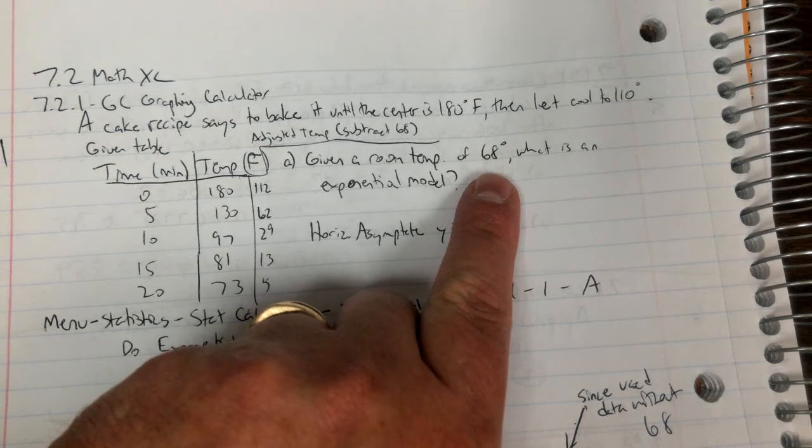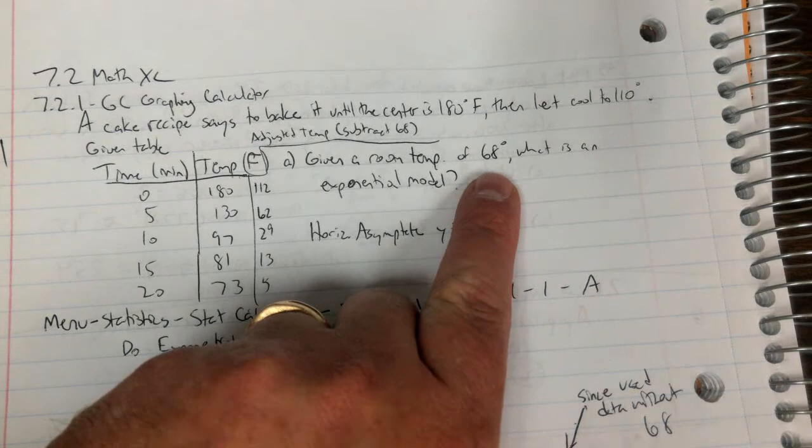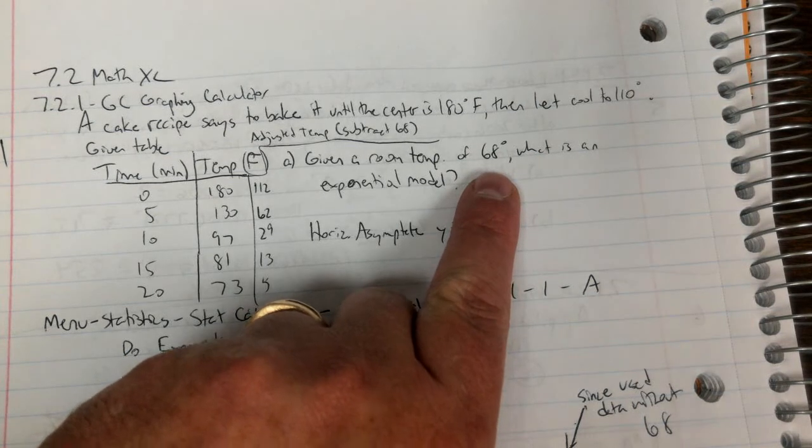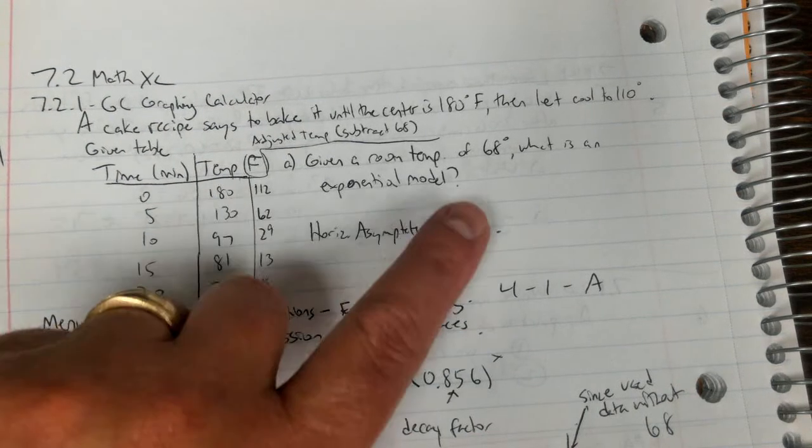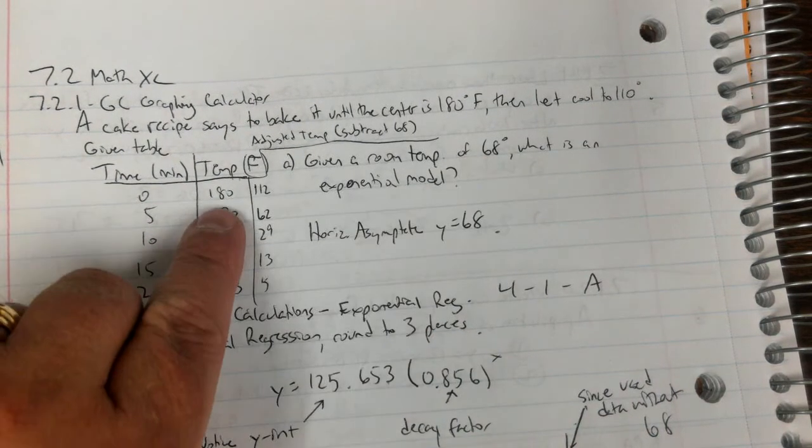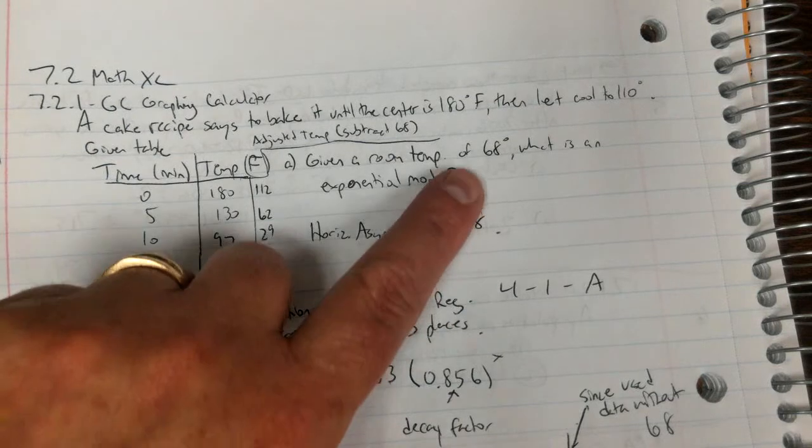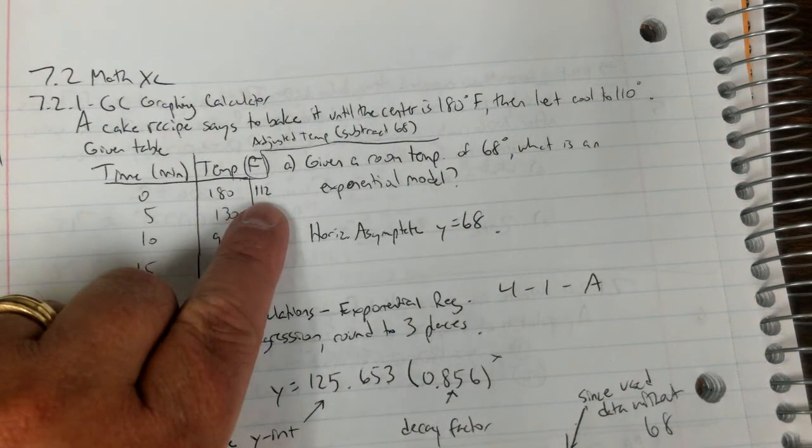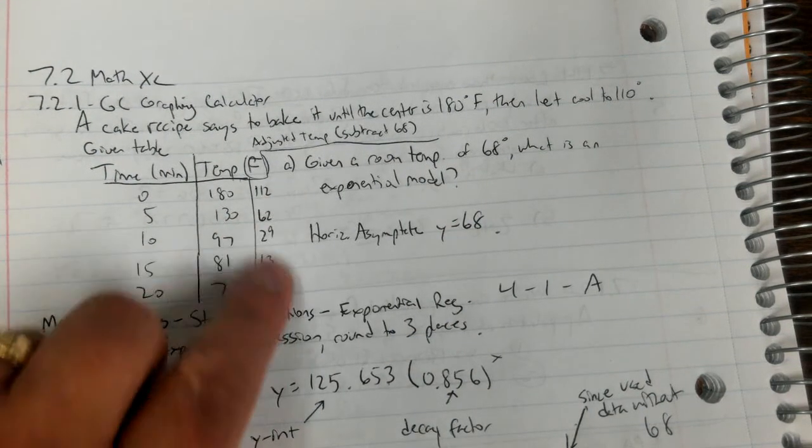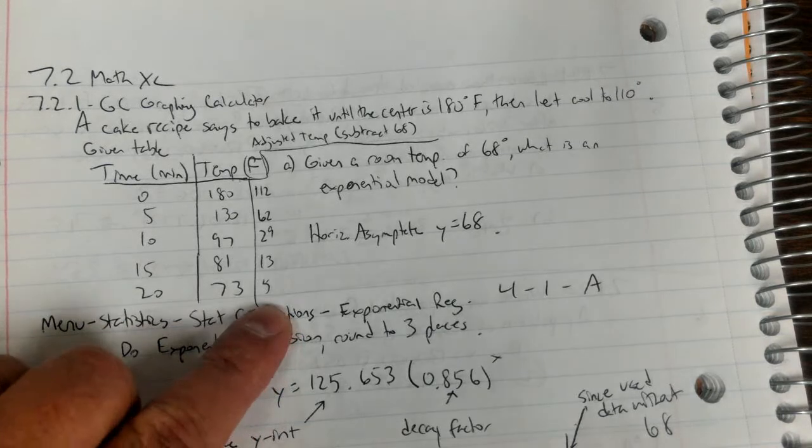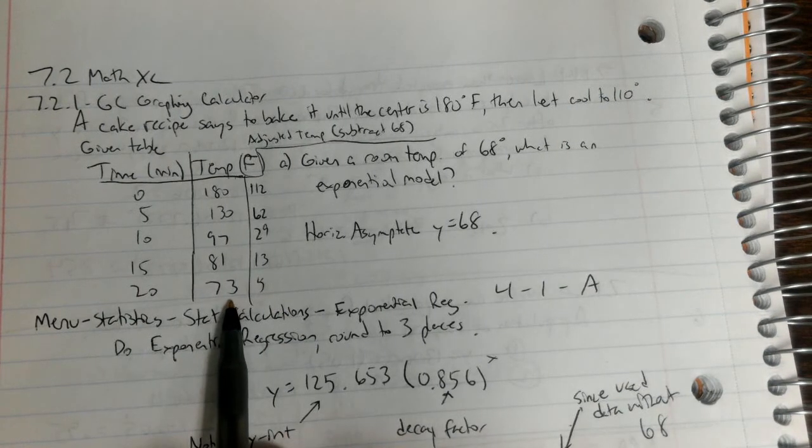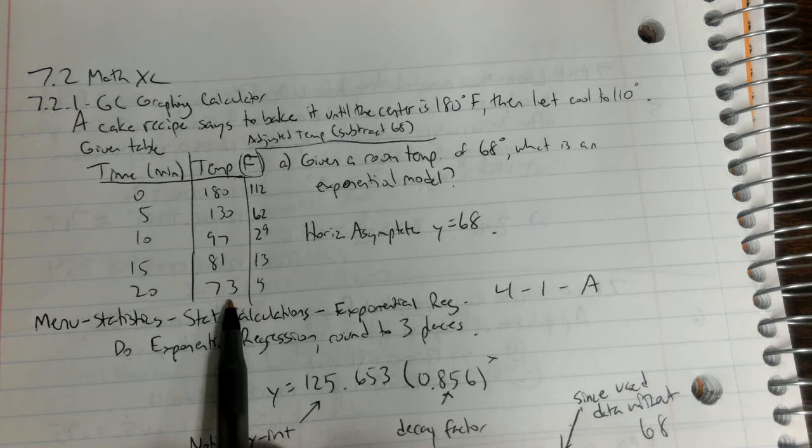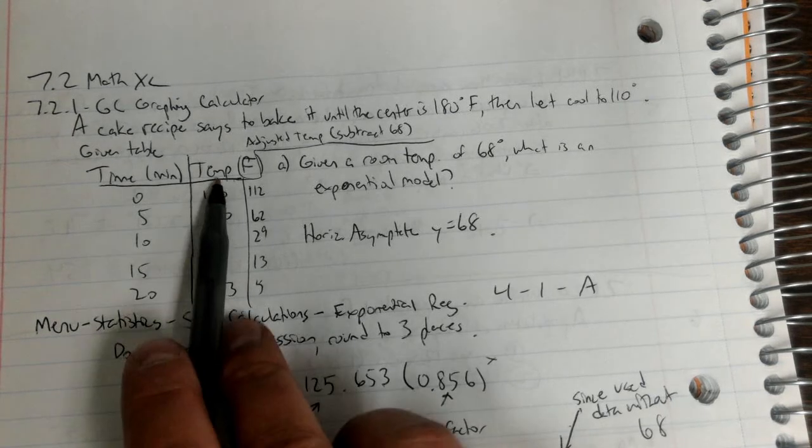In my case I have 68 degrees, yours may say 70 or something else. What you do is take your temperature minus the other temperature, like 180 minus 68, and that gives you 112. You have to do that the whole way down.